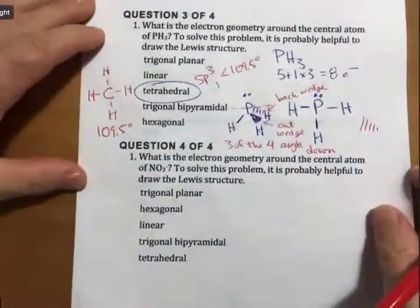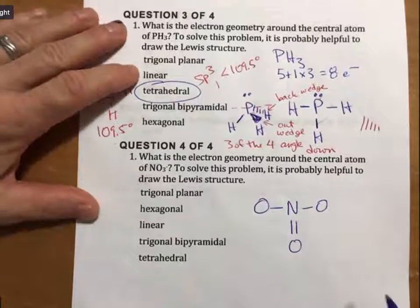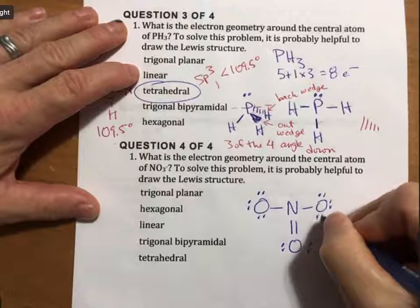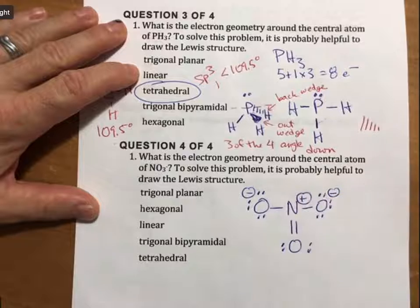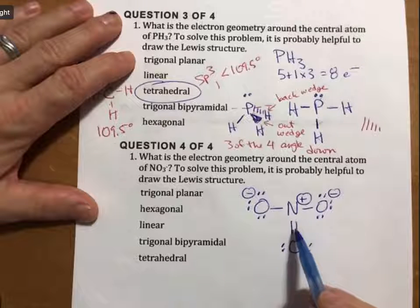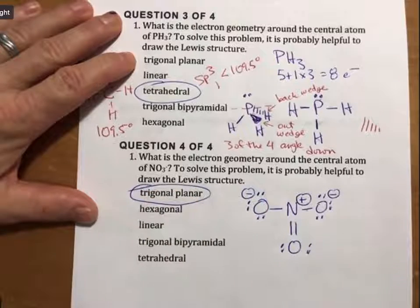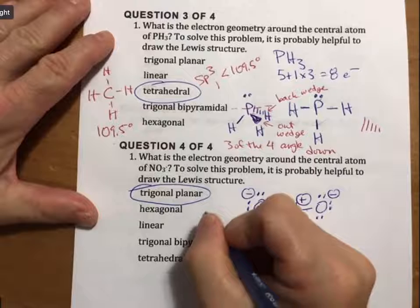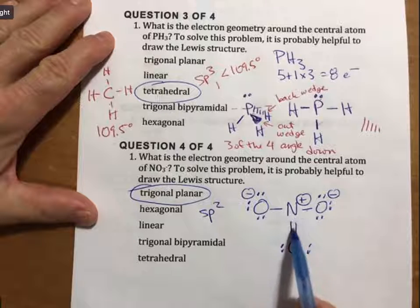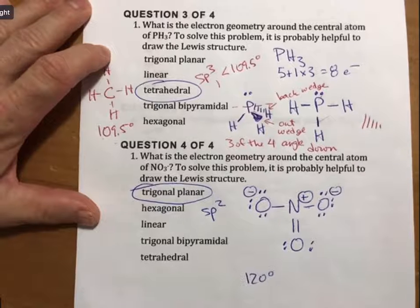Let's do the other one now. For nitrate, we've already drawn its best Lewis structure on a previous problem. That is the best Lewis structure for the nitrate ion. We look around the central atom and see one, two, three electron groups, which means trigonal planar. Were we to continue, we would say it's sp2 hybridization because three electron groups means three hybridized orbitals. For bond angles, since all of these are atoms, we would say it's a perfect 120 degrees. Any questions about that?